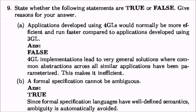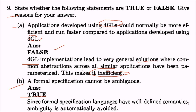Ninth question: true or false with reasons. (a) An application developed under 4GL would normally be more efficient and faster compared to an application developed using 3GL — this is FALSE, because 4GL implementation may lead to degenerate submission where common constructions across similar applications have been parameterized, making it inefficient. (b) A formal specification cannot be ambiguous — this is TRUE, because well-defined semantics using logic and mathematical expressions eliminate ambiguity.